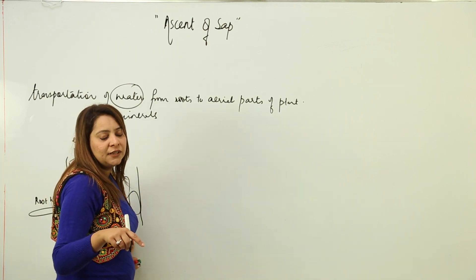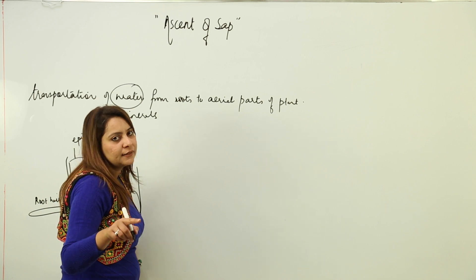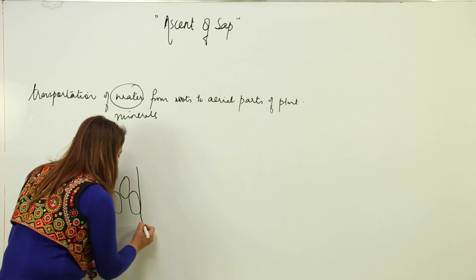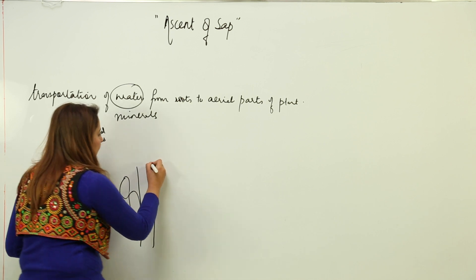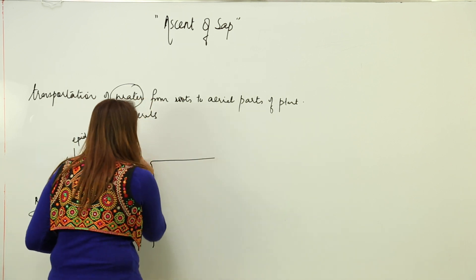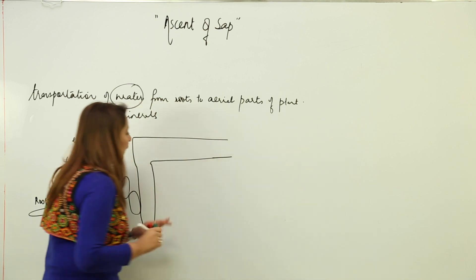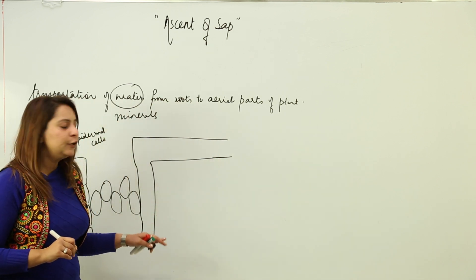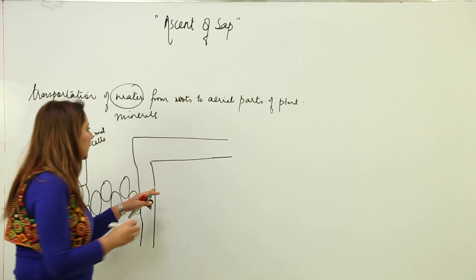The xylem vessel is common throughout the whole plant, meaning the xylem vessels of the leaf, root, and stem are actually interconnected. So the xylem vessel of the root is connected to the xylem vessel of the leaf. Now we are going to see the structure of the leaf.